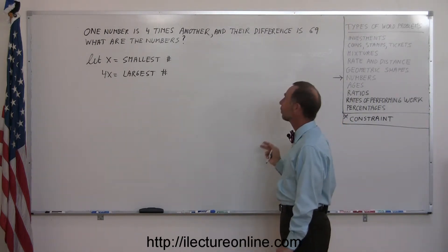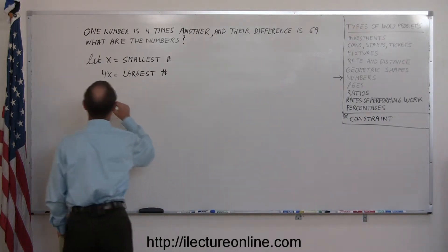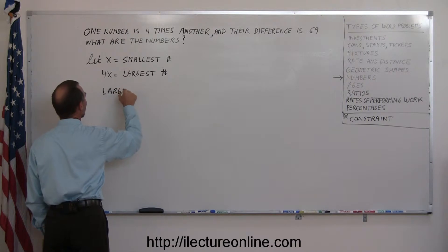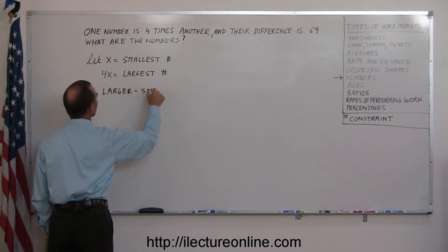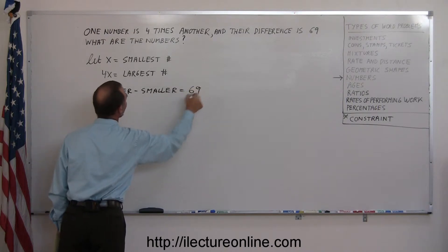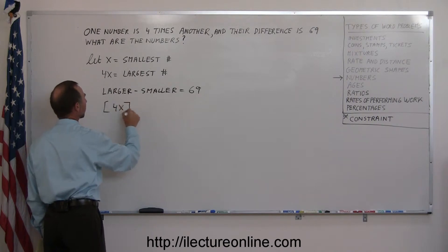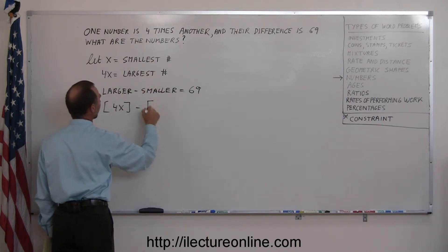It tells us that the difference between the two is 69, so that's the constraint that's going to help us. So the larger minus the smaller equals 69. The larger of the two numbers is 4x, and now we replace what they are. So 4x minus the smaller number, which is x,